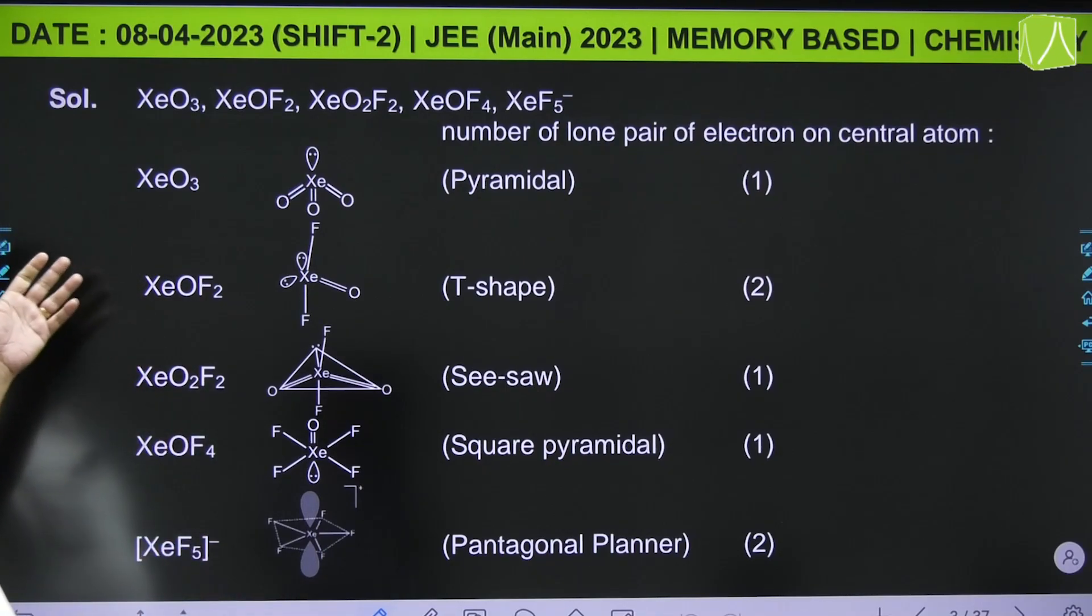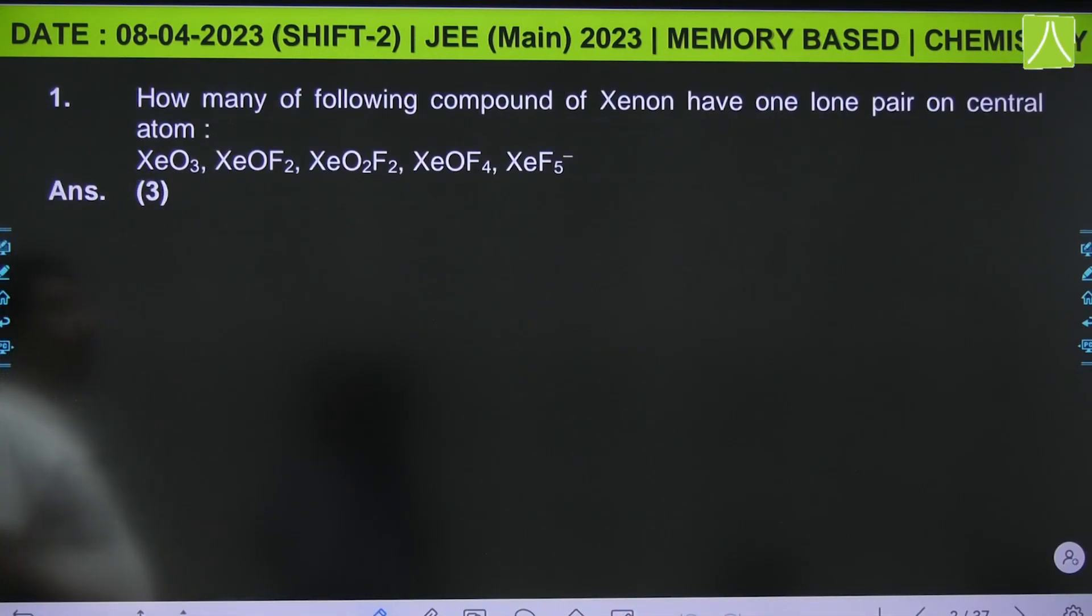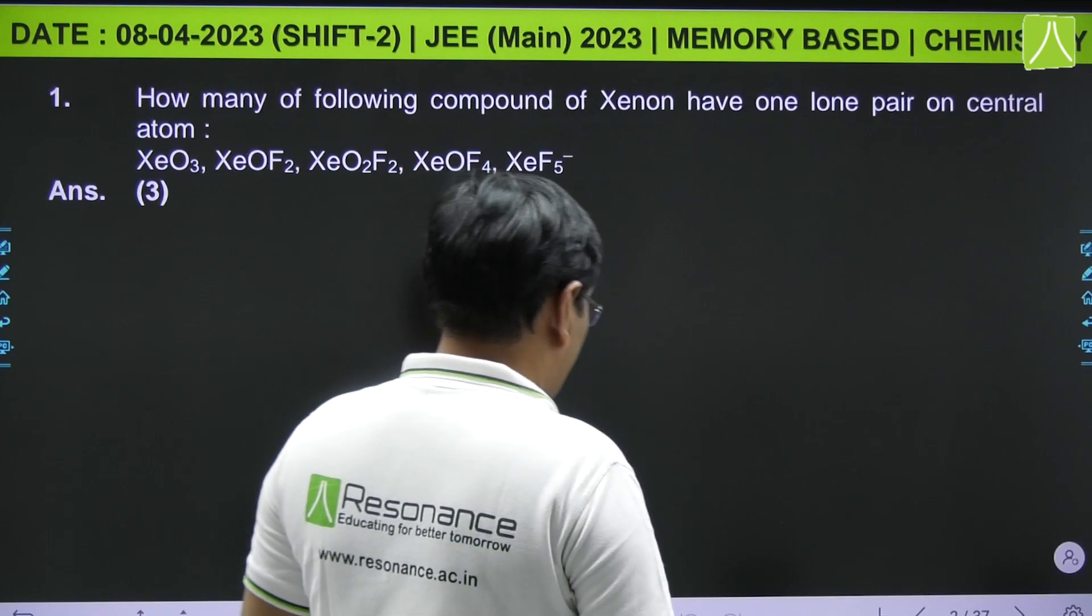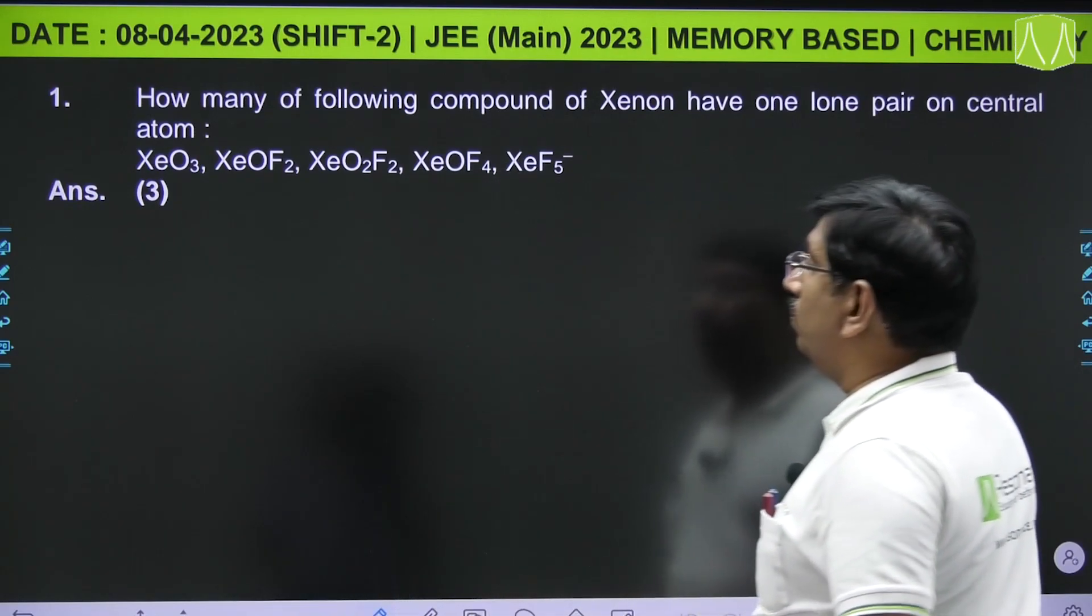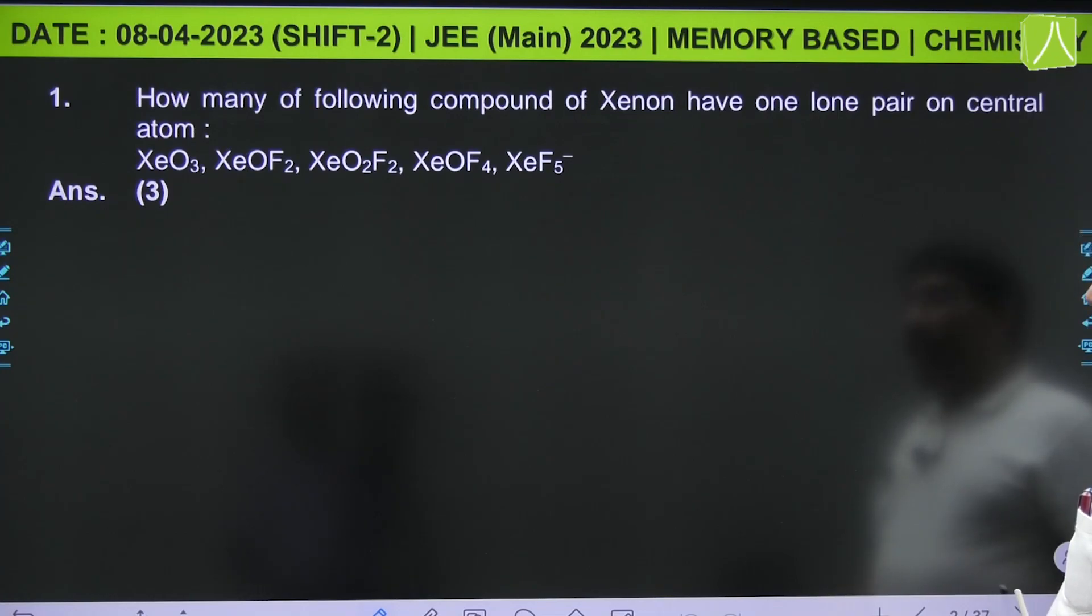The first question: how many of the following compounds of xenon have one lone pair on central atom? The given compounds are XeO₃, XeOF₂, XeO₂F₂, XeOF₄, and XeF₅⁻.